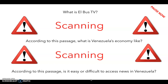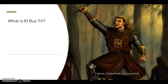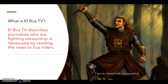On this screen, you can pause the video if you have the PDF, or go back to the article and read it each time to answer each of these three questions: What is El Bus TV? According to this passage, what is Venezuela's economy like? And according to the passage, is it easy or difficult to access news in Venezuela? Pause the video now and try to answer these questions. So, what is El Bus TV? If you answered something similar to: El Bus TV describes journalists who are fighting censorship in Venezuela by reading the news to bus riders — then you're pretty good at scanning already.